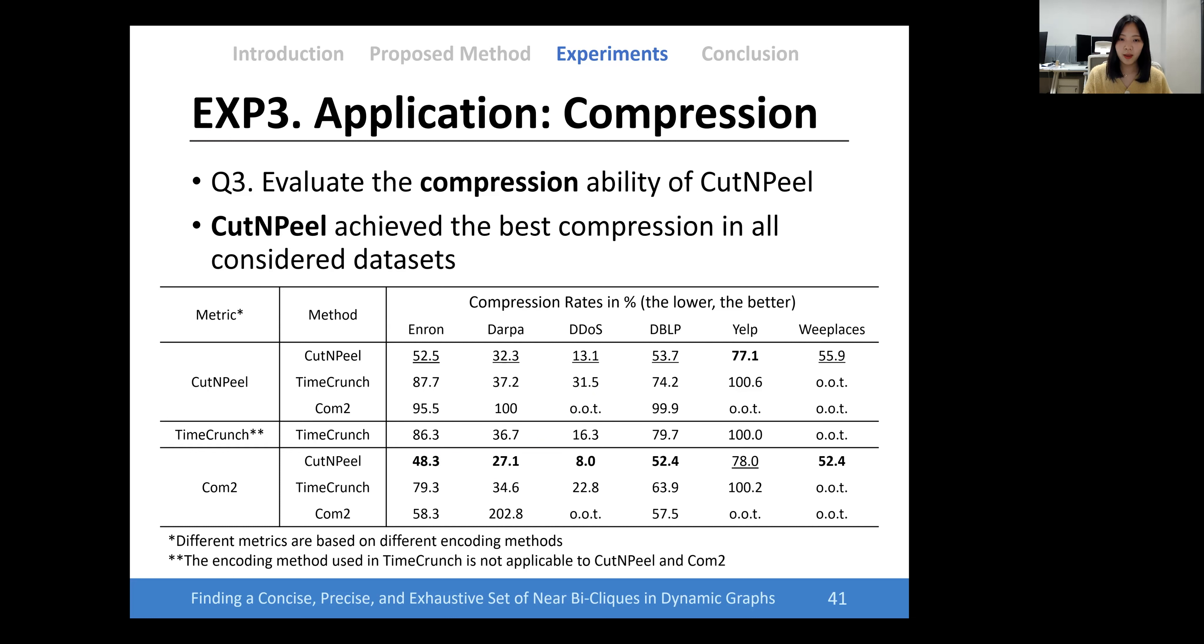Next, we evaluated the compression ability of Cut and Peel. In the table, the bold letter is the best method and the underlined letter is the second best method. As a result, Cut and Peel achieved the best compression in all considered datasets.